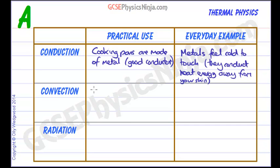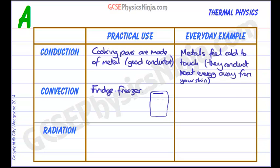Convection is used practically in a fridge freezer. At the top of the fridge compartment there is usually a cooling element, and that cooling element cools the air, making it more dense so it falls down. The warm air then rises and takes its place. We get this continuous convection cycle which keeps the refrigerator compartment cool in a consistent way — so it's as cool at the bottom as it is at the top. Cool air sinks and warm air rises.